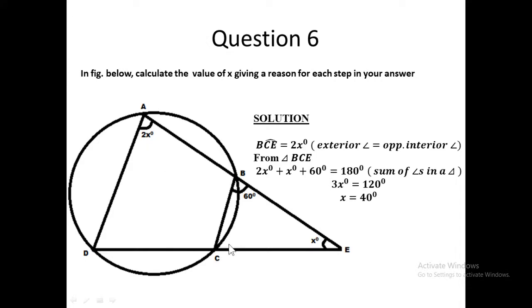Now you're having angle BCE, this angle here, is what? 2x degrees. Why? Exterior angle is equal to opposite interior angles of a cyclic quadrilateral. So from this triangle BCE, now you have this angle to be 60 degrees, this angle to be 2x degrees, and this angle to be x degree.